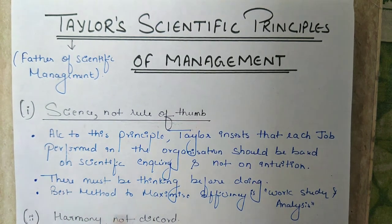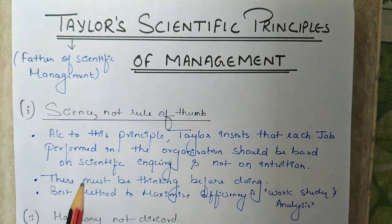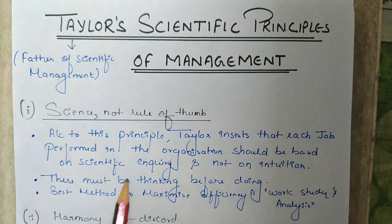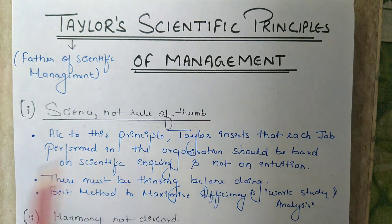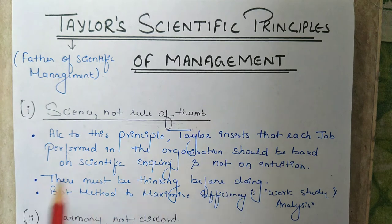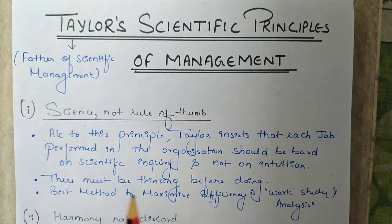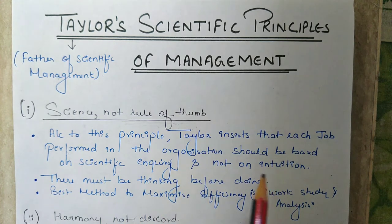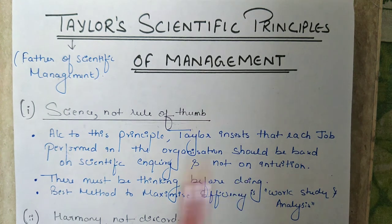According to this principle there are two methods of doing any job: traditional method and modern method. For example, advertisement can be done by traditional method and modern method. Traditional method may include offline methods such as pamphlets, brochures, and posters. Modern method may include online methods such as Facebook, YouTube, and social media.